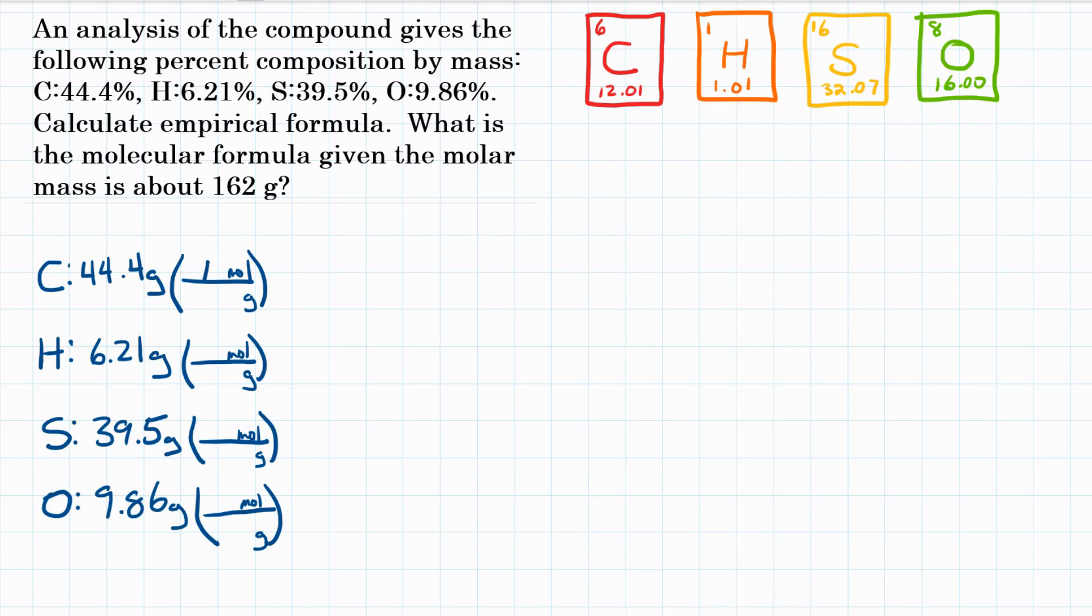And we're going to talk about one mole. So what is the mass of one mole of each of these elements? We're going to look at our periodic table. For carbon, it is 12.01. For hydrogen, 1.01. For sulfur, 32.07. And for oxygen, 16.00.